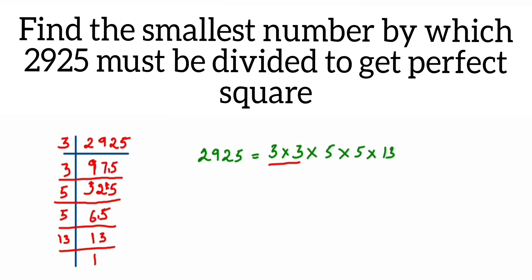Once you're done, start pairing up the factors. So you can see there's a pair of 3 and 5, but 13 is single. It doesn't have any pair, so the smallest number to be divided will be 13, because if I remove this 13, then I'll get a perfect square and you can find the square root of that number.